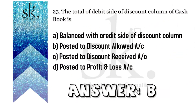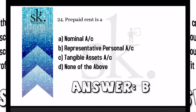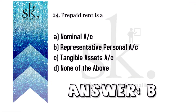The next question: the total of the debit side of the discount column of a cash book. The debit side discount column is discount allowed, and the credit side is discount received. Therefore the answer will be B — posted to discount allowed account.